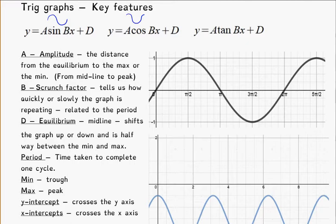So A is your amplitude, and that tells you literally the distance from your equilibrium, or from the midline of the graph, to the max or min, so from midline to peak.